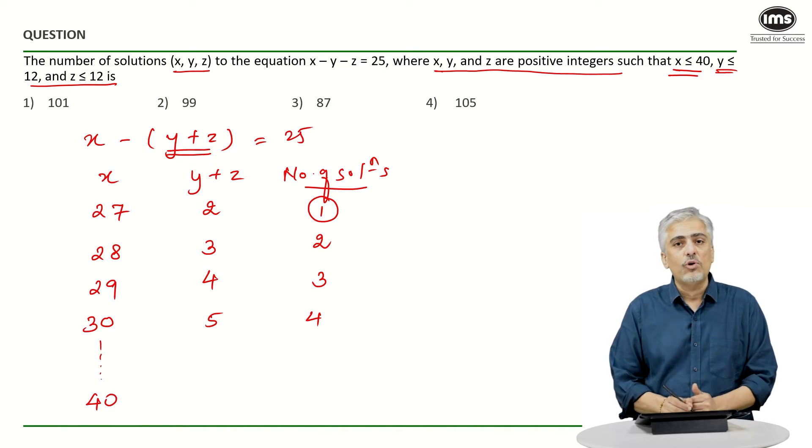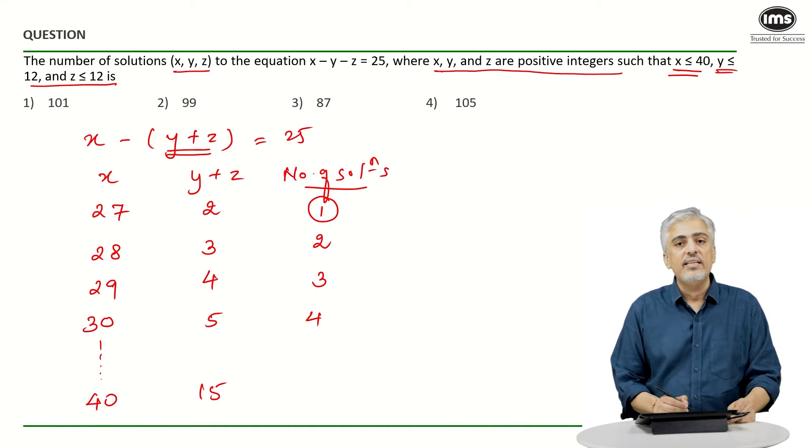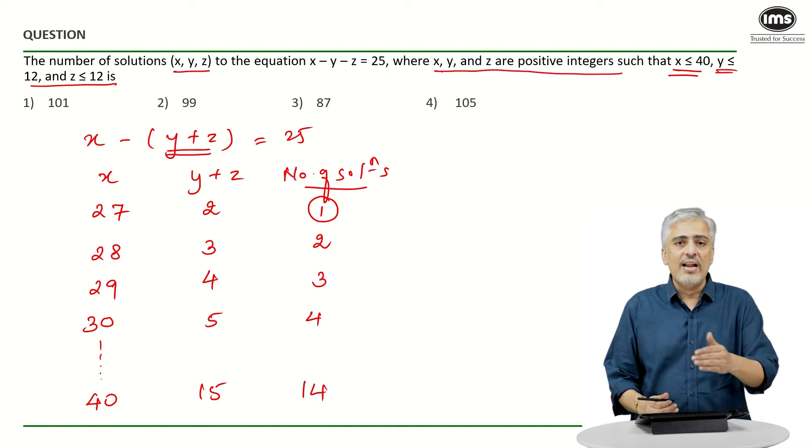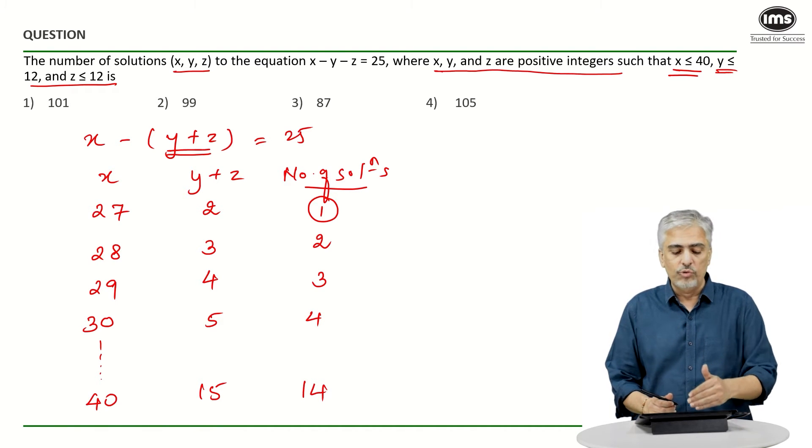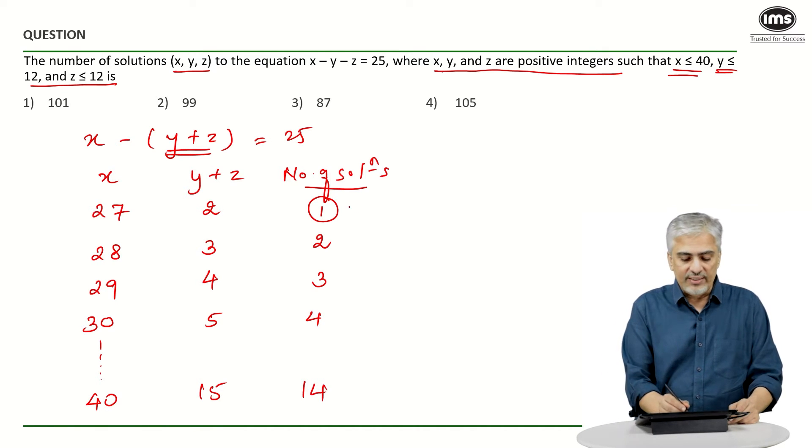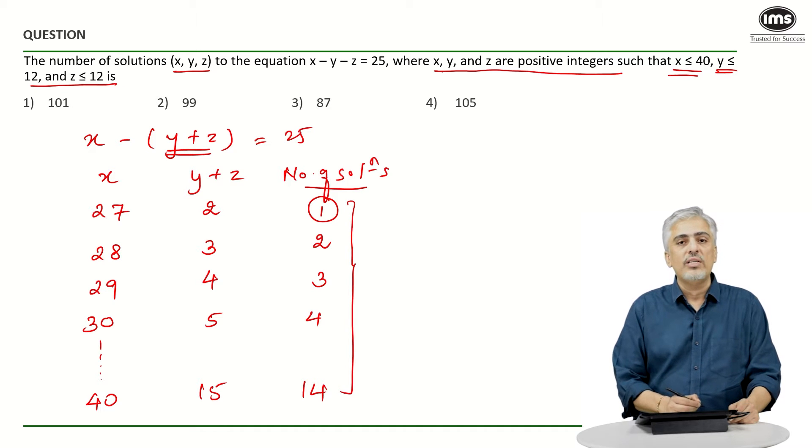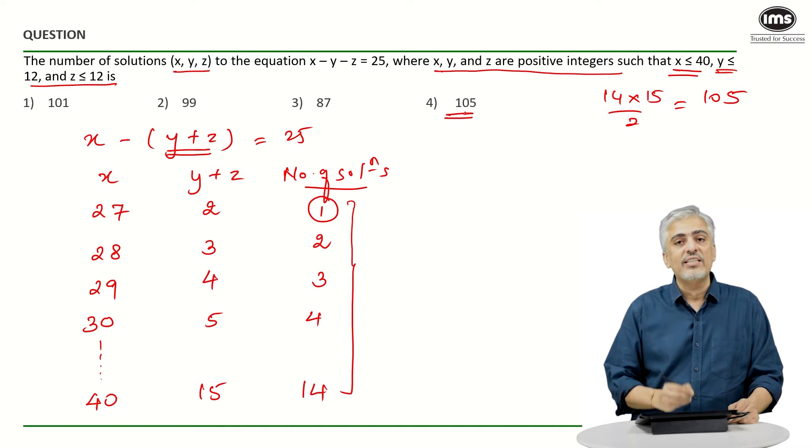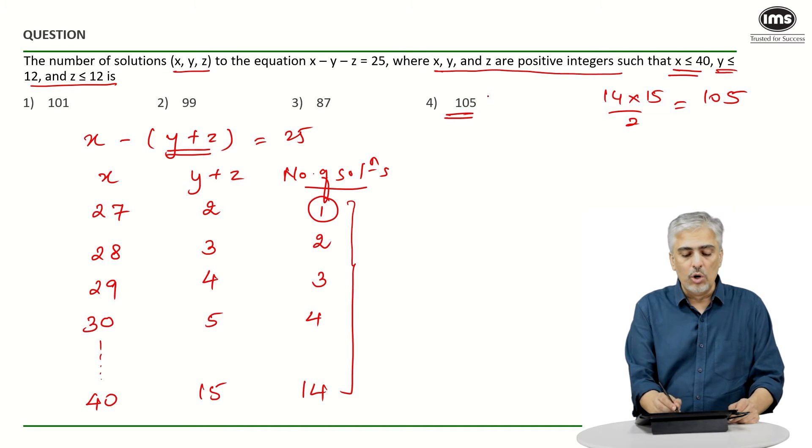Now taking x as 40, they said let y plus z equals 15. If y plus z is 15, exactly in the same way, they would have said there are 14 solutions, just not thinking, and would have written all the solutions like 1 to 14. Then they would have done the sum of all this. What is 1 to 14 sum? 1 plus 2 plus 3 up to 14 is n into n plus 1 upon 2, that will be 14 into 15 upon 2, which gives you 105. And there is an option of 105 also. I'm sure a lot of people marked this option which was the incorrect answer.